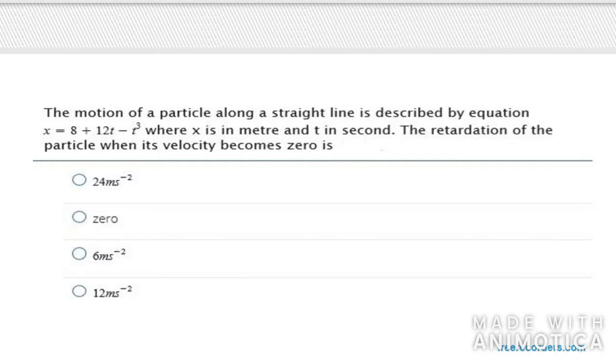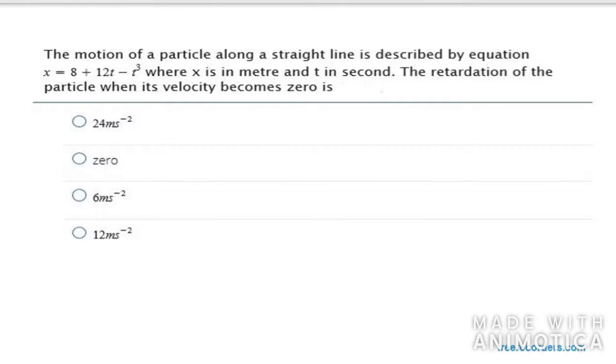The first question says that the motion of a particle along a straight line is described by an equation x equal to k plus 20 minus dt. In this question we need to find the retardation of the particle. For retardation we need to have the velocity, and velocity is nothing but del x over del t. So we basically need to differentiate x with respect to time.